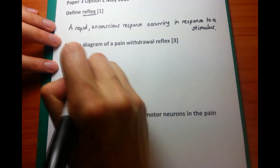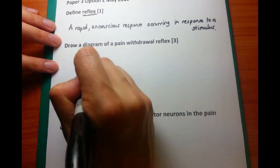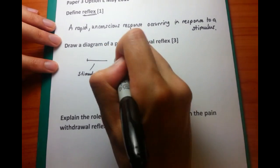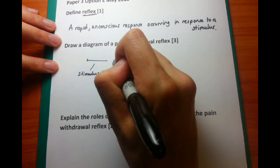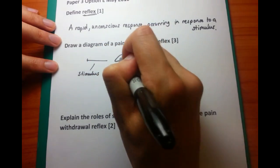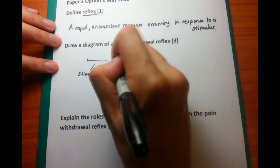Now the next one is something that I can give you a bit more assistance with. Draw a diagram of a pain withdrawal reflex. You need to do at least five different parts of the pain withdrawal reflex.